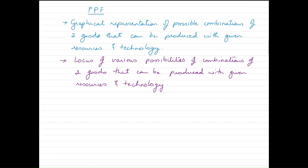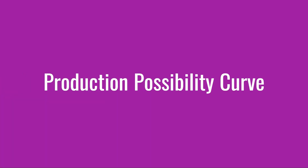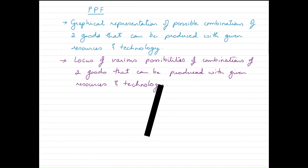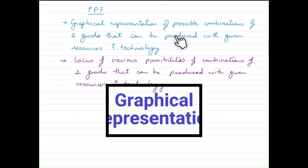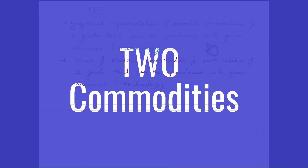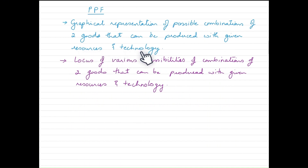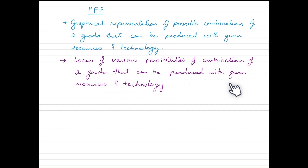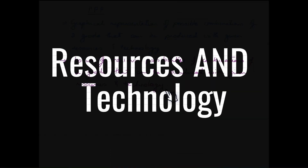PPF stands for production possibility frontier, and PPC is the short form of production possibility curve. A PPC curve is a graphical representation of possible combinations of two commodities or two goods that can be produced with given resources or technology — a locus of various possibilities of combinations of two commodities that can be produced with given resources or technology.